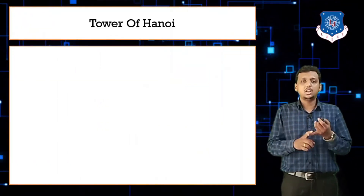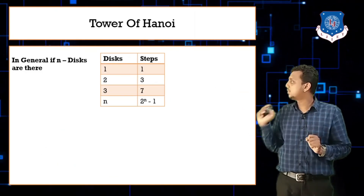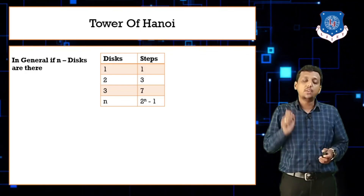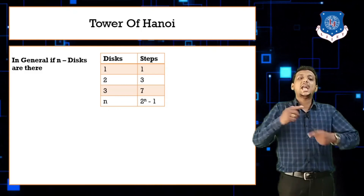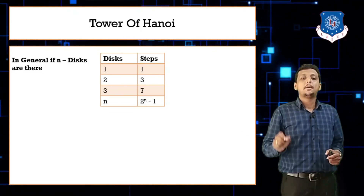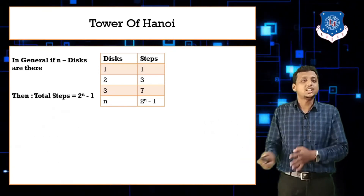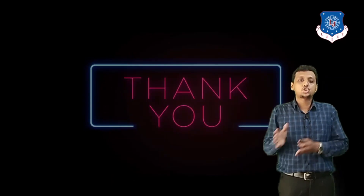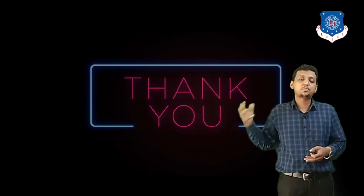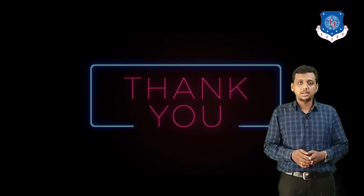In summary: when n equals one, you need one step; when n equals two, three steps; when n equals three, seven steps. In general, for n discs, the number of steps required is two raised to the power n minus one. Always show the steps for n equals one, two, and three in exams. If you have any doubts about the Tower of Hanoi problem, feel free to ask. Thank you.